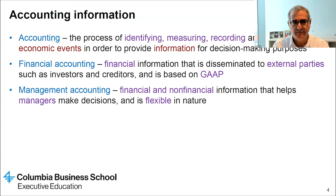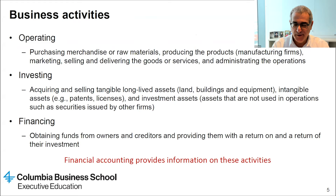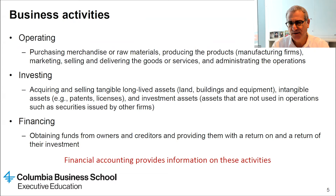Financial accounting provides information on business activities. Business activities consist of operating, investing, and financing. Operating activities include purchasing merchandise or raw materials for a manufacturing company, producing the products, marketing, selling and delivering the goods or services, and administration.